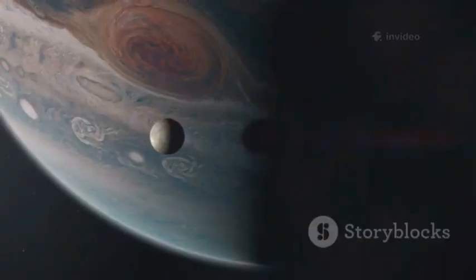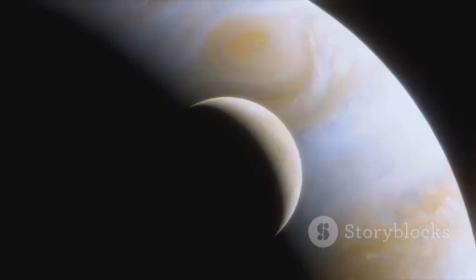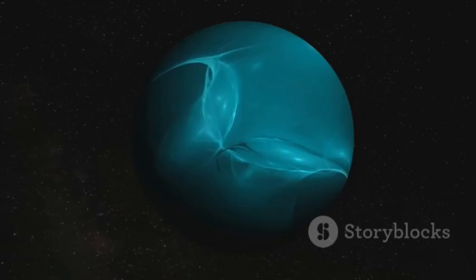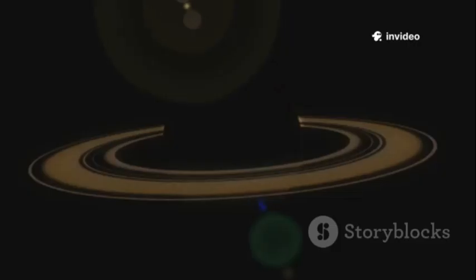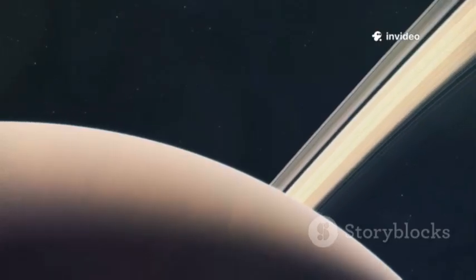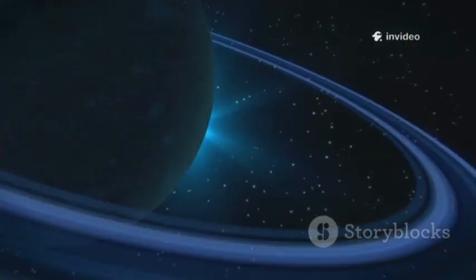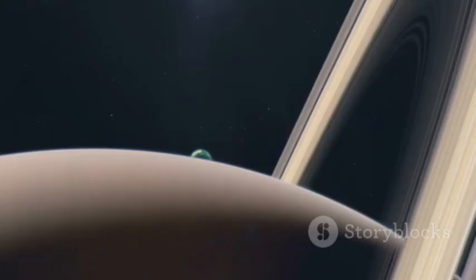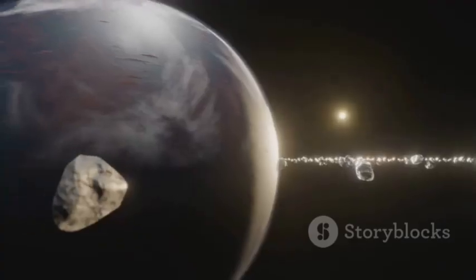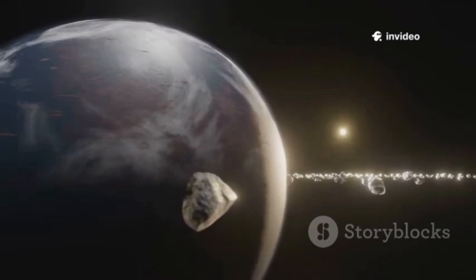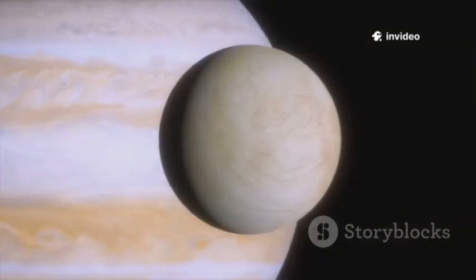But its retrograde orbit is unstable, Triton is spiraling inward. In 3.6 billion years Neptune's gravity will tear Triton apart at the Roche limit. The debris will form a brilliant ring system, rivaling Saturn's. For a time, Neptune will wear its lost moon as a crown. Triton's fate is a reminder of the solar system's ongoing drama. Even distant worlds are shaped by cosmic collisions. Neptune's moons are witnesses to a violent past.